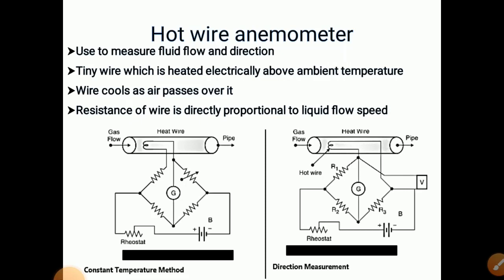On the right hand side, a similar diagram is shown with the same bridge circuit, and one extra terminal is taken out for measurement of direction. Depending upon change in direction, the voltage produced is either positive or negative so that we get direction of flow. Like this, hot wire anemometer is useful for measurement of fluid flow and direction.